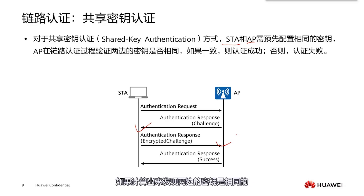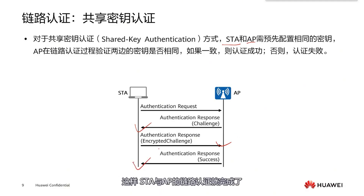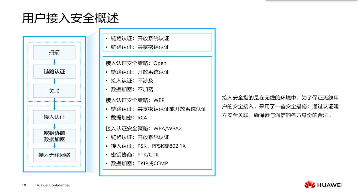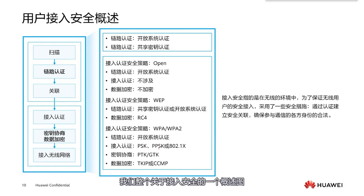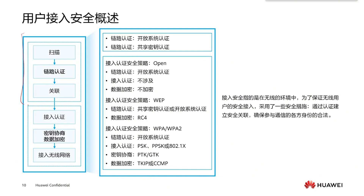These are the two methods of link authentication. Now let's look at an overview diagram of our entire access security. In this diagram, we can see within this box we performed scanning, link authentication, and association processes. Below that, we have access authentication, which is also very important.